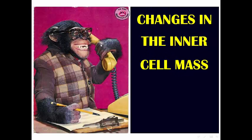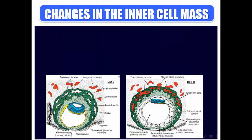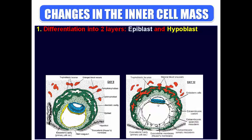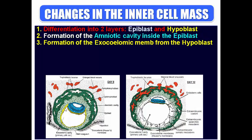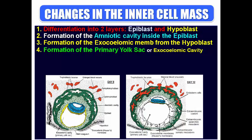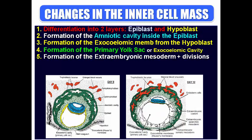Changes in the inner cell mass, which will form the embryo. The inner cell mass becomes divided into two layers: epiblast (the blue one) and hypoblast (the yellow one). Formation of a cavity inside the epiblast — the amniotic cavity. Formation of the exocoelomic membrane from the hypoblast, which surrounds a new cavity called the primary yolk sac cavity. The exocoelomic membrane forms a new tissue between the trophoblast and itself called extraembryonic mesoderm. Cavities appear in the extraembryonic mesoderm called the extraembryonic coelom. Then formation of the chorion.